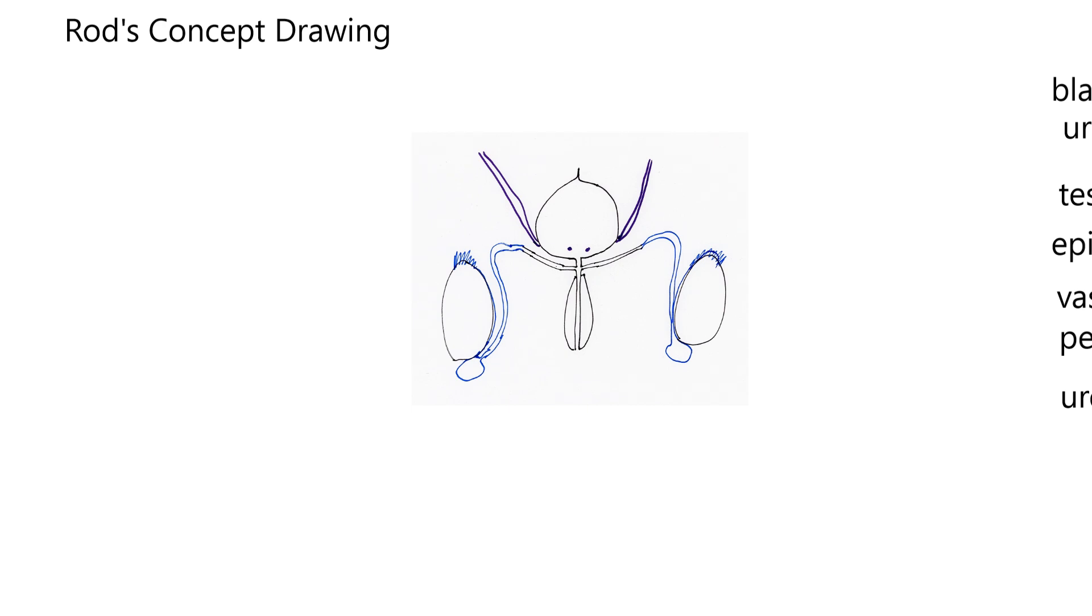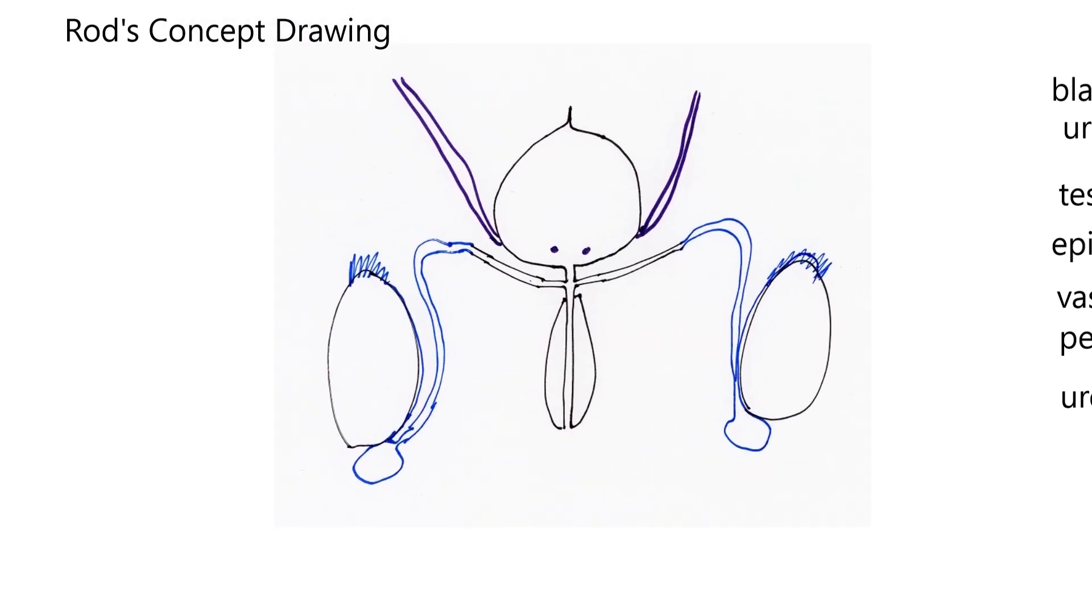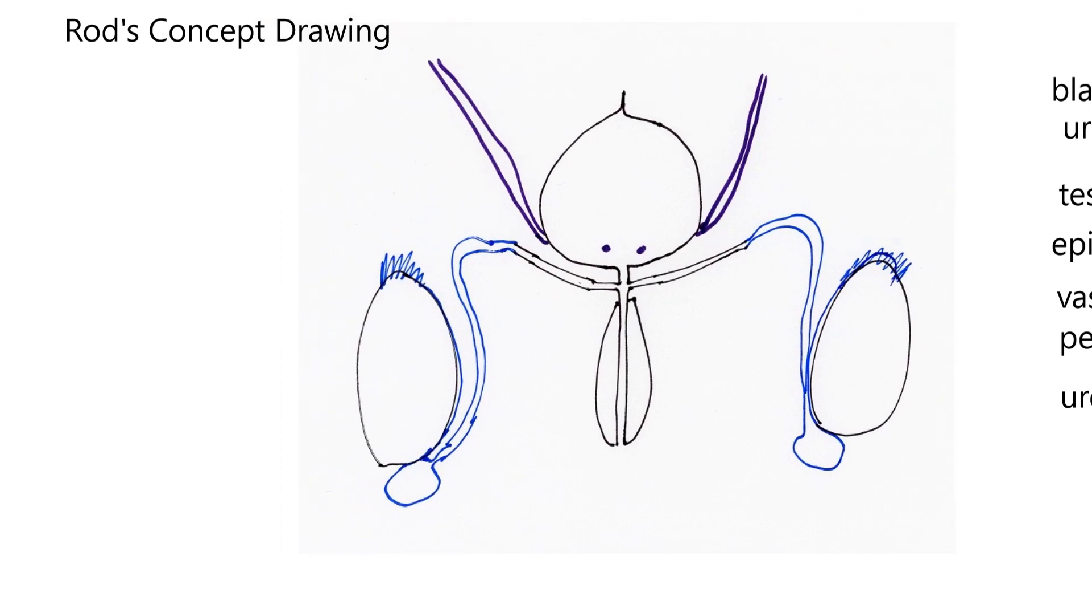Before we look at any fancy drawings by medical illustrators, I wanted to show you what I would call the bird's eye view of a generic male reproductive system. I'm calling it Rod's concept drawing because I've used these in the past. Promise not to laugh though, because it kind of looks like some insect. But let me orientate you. This is like a bird's eye view of a generic reproductive tract. This is cranial up here where my pointer is.